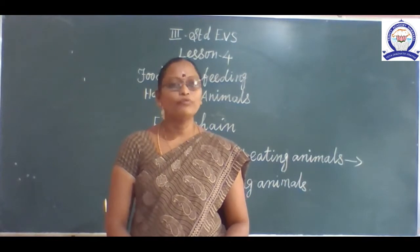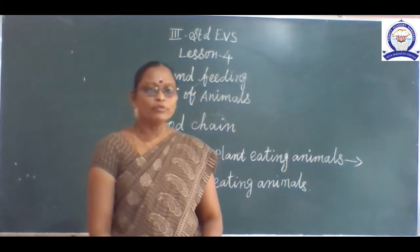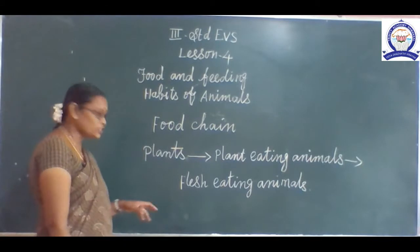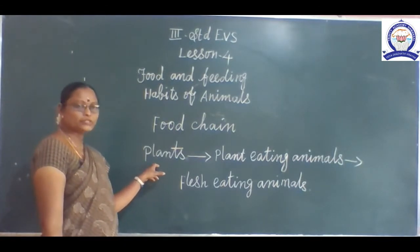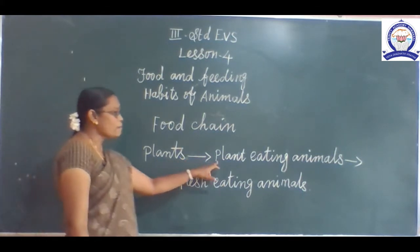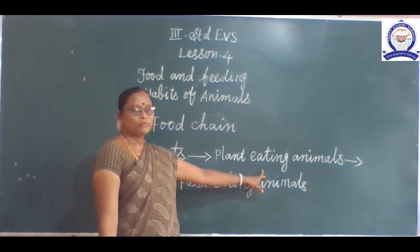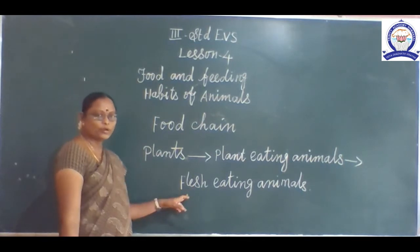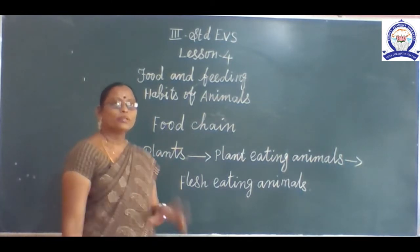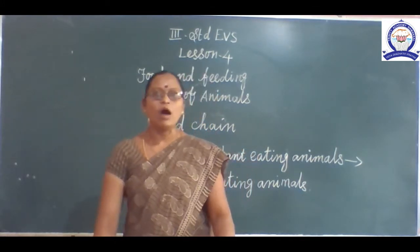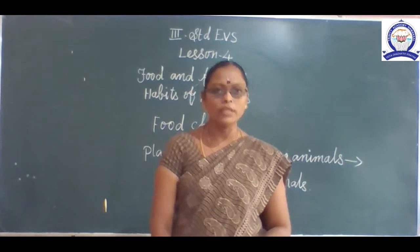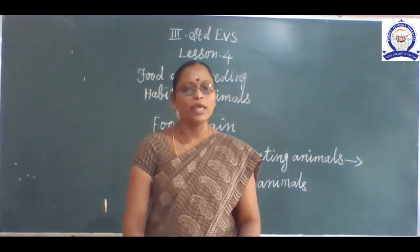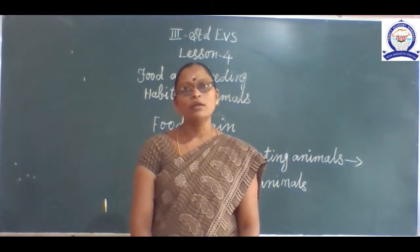The next topic is the food chain. Where does the food chain start from? The food chain starts from plants. Next are plant-eating animals, and last are flesh-eating animals. Some animals depend on plants for food — such animals are called plant-eating animals.